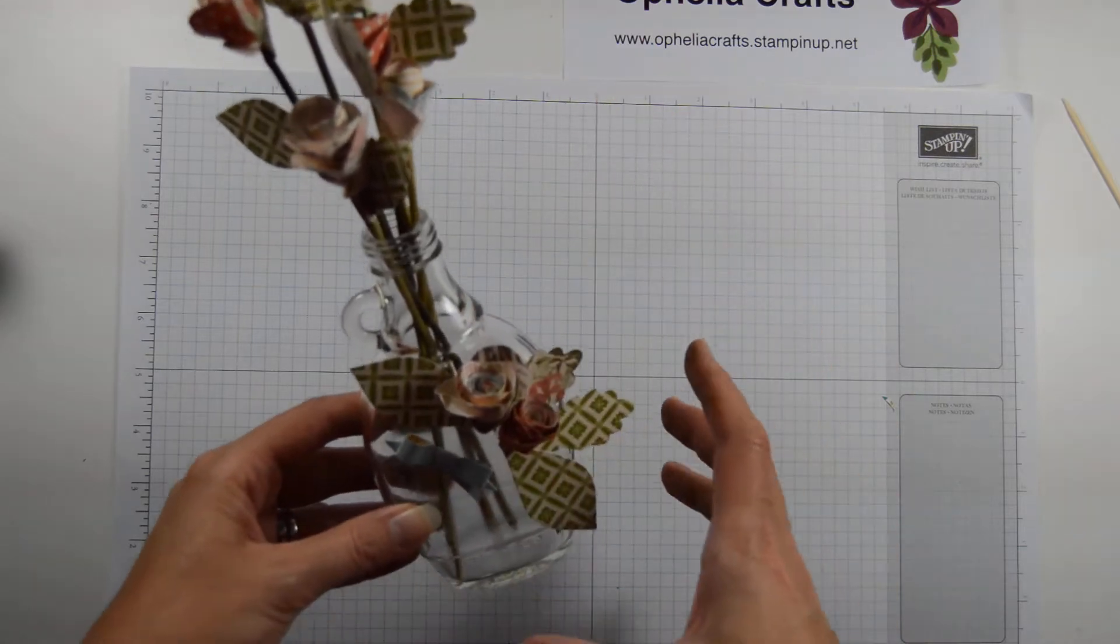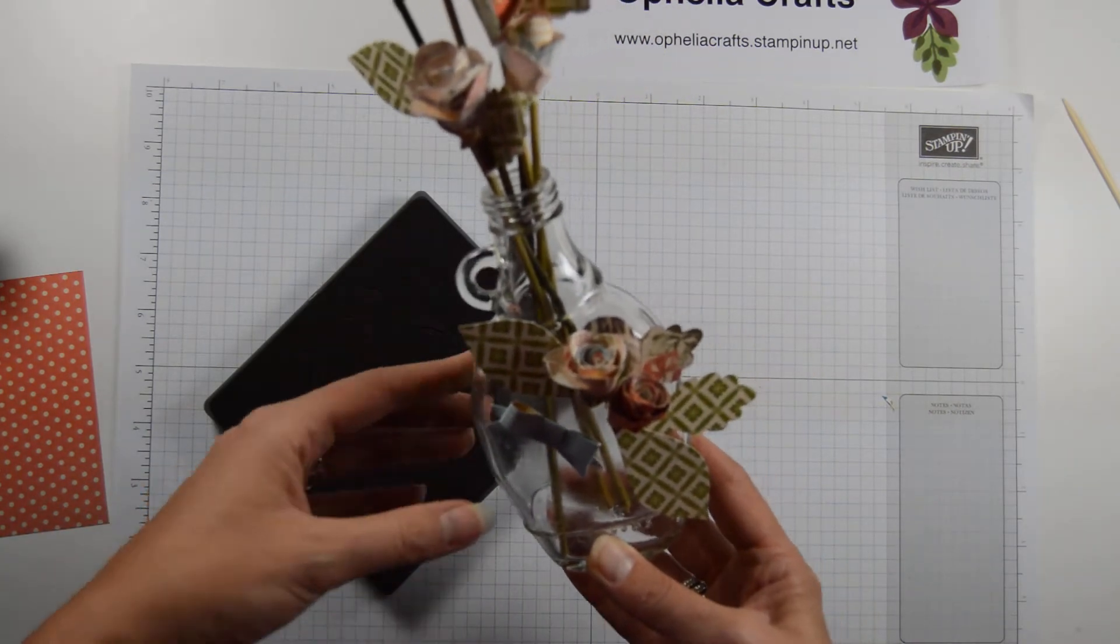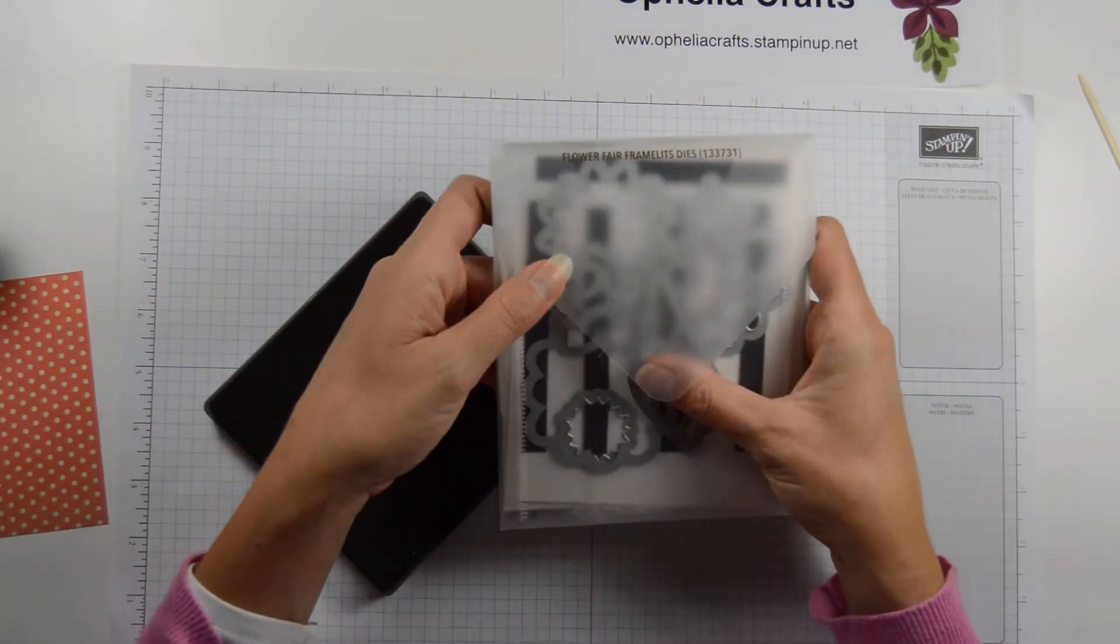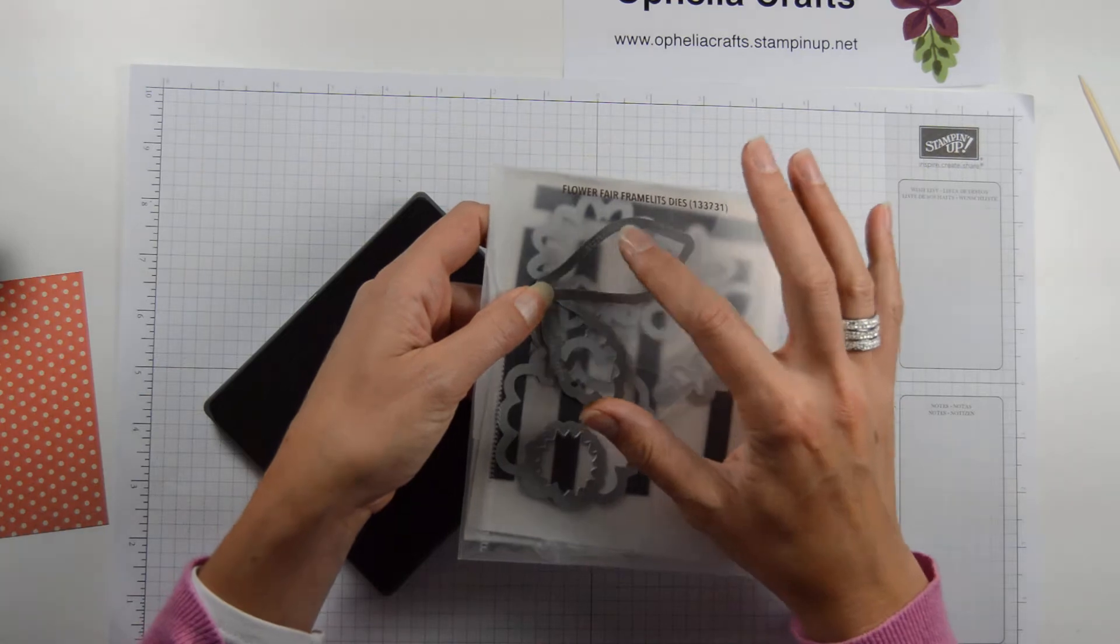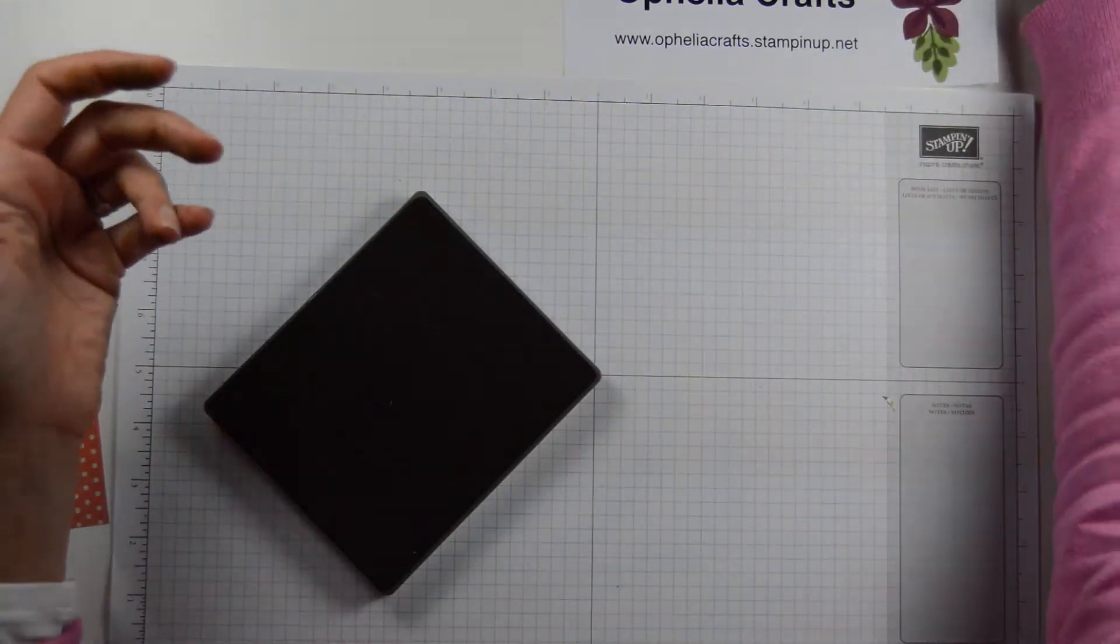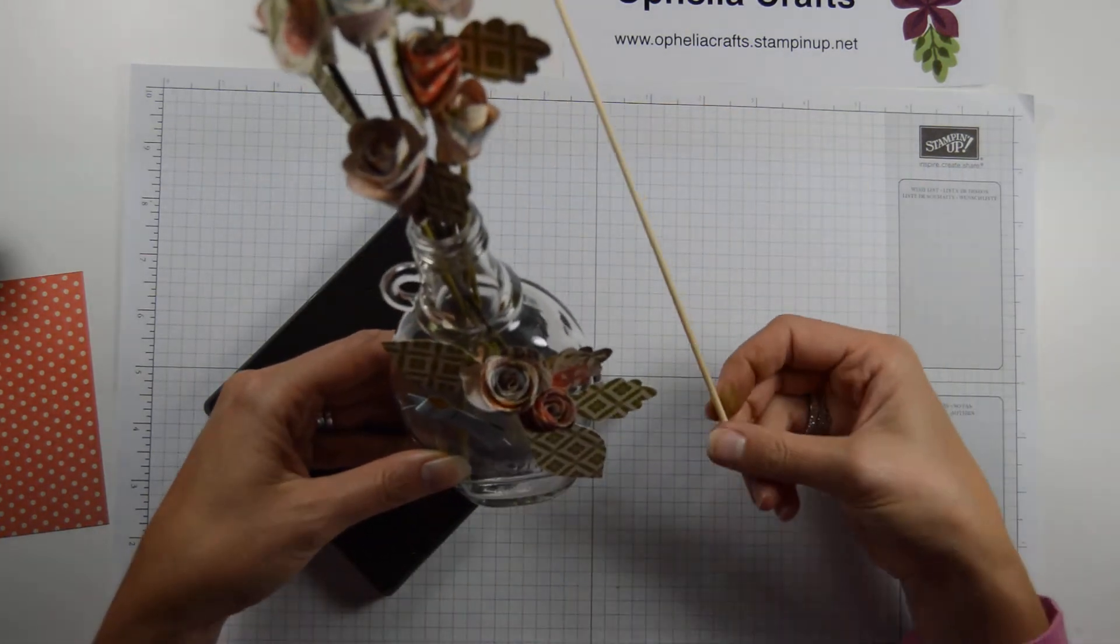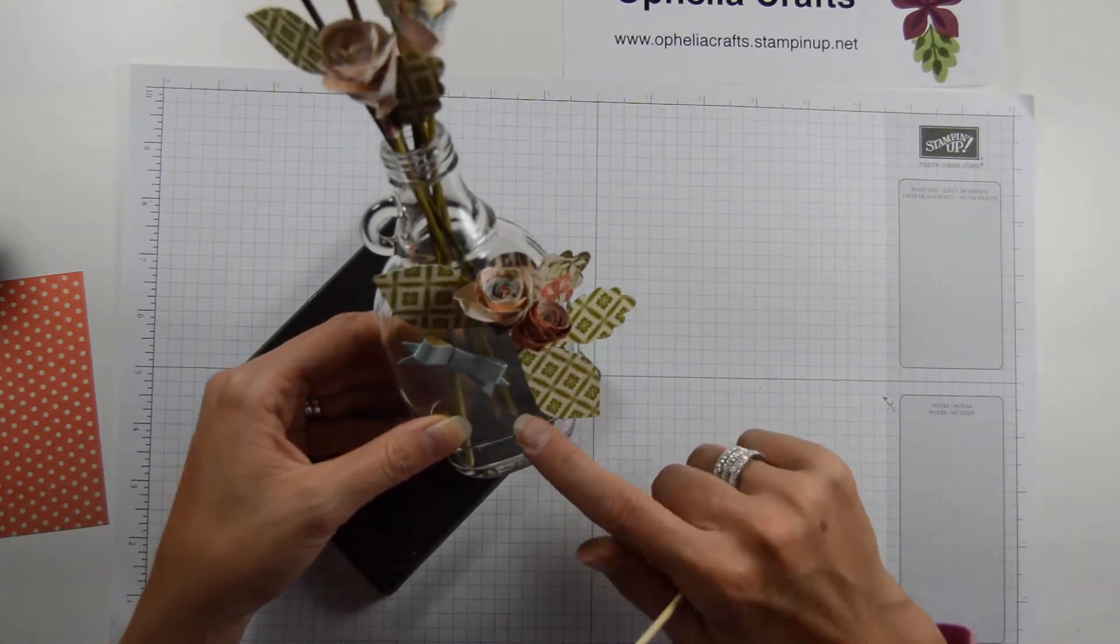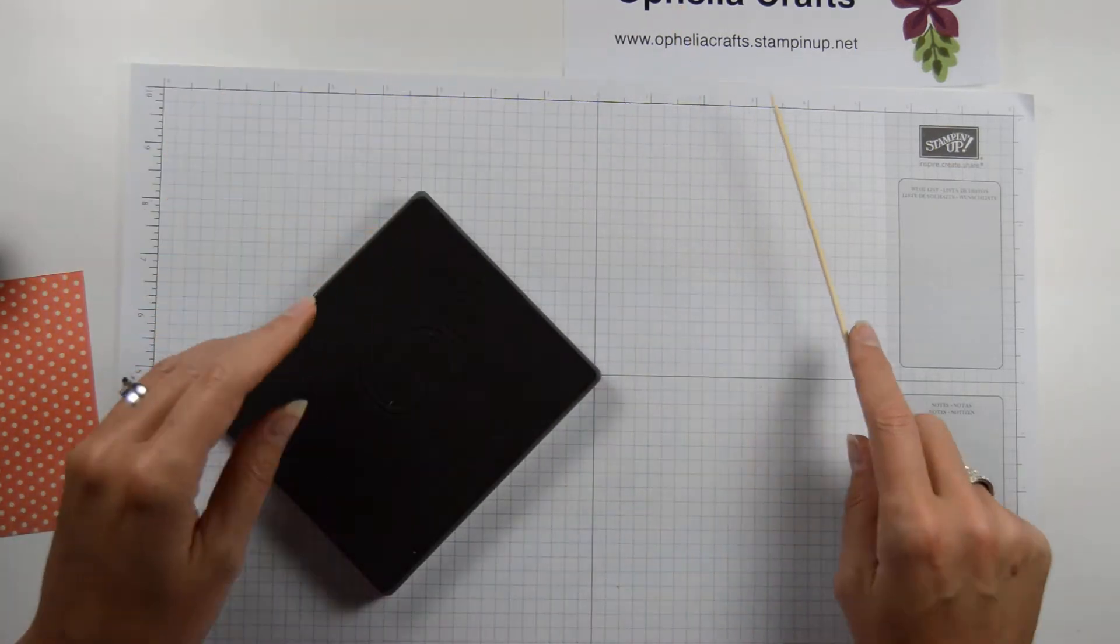I made these roses using the spiral flower die and I also used the flower fair framelits to do the leaves. Now I know technically these are not rose leaves because they're sort of spiky, but they are paper roses so I just thought I would use whatever was handy. I used satay sticks, kebab sticks to put the roses on and I've also made a little bow out of paper. Today I just want to show you how you go about creating the roses.